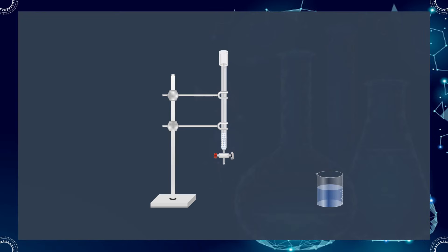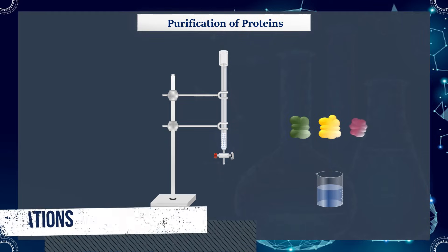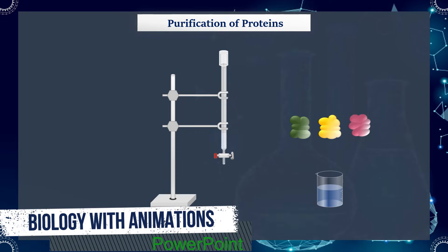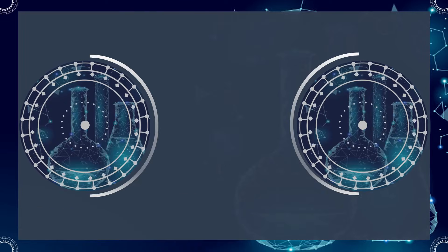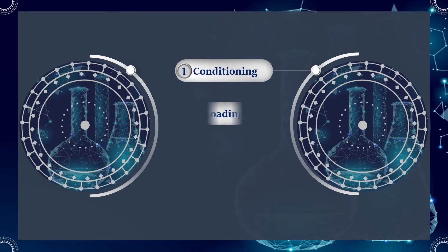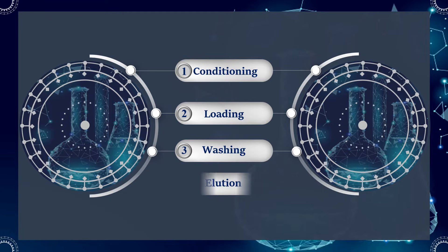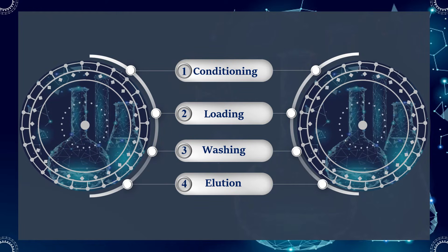Ion-exchange chromatography is frequently used for the separation and purification of proteins. The basic process of this chromatography can be represented in four steps: conditioning or equilibration of the stationary phase, sample loading, washing, and elution of the retained molecules.